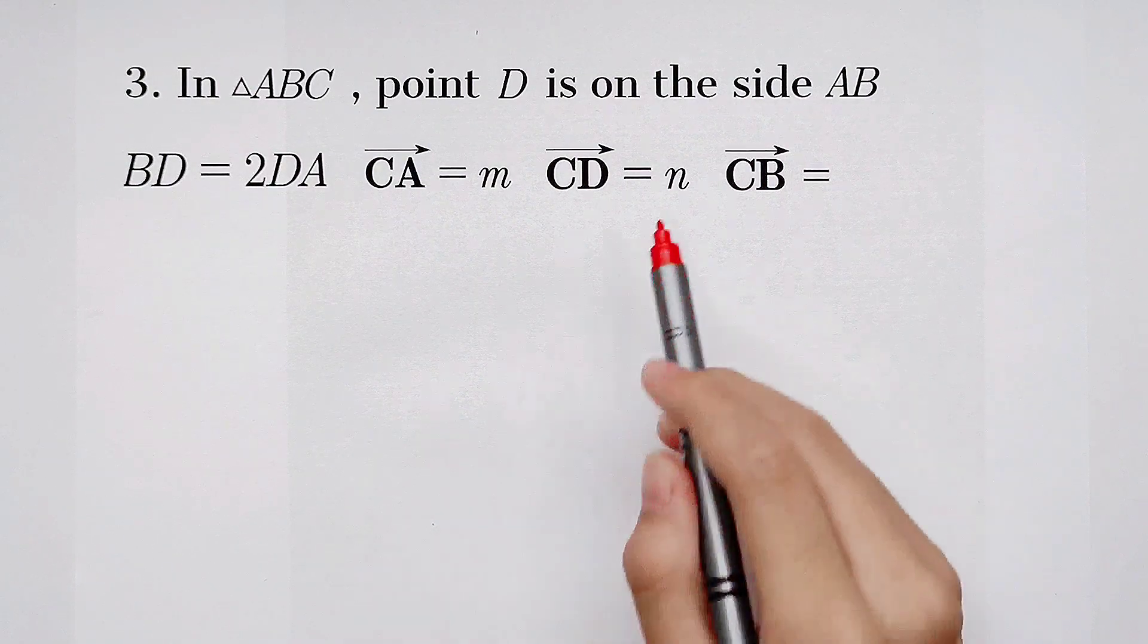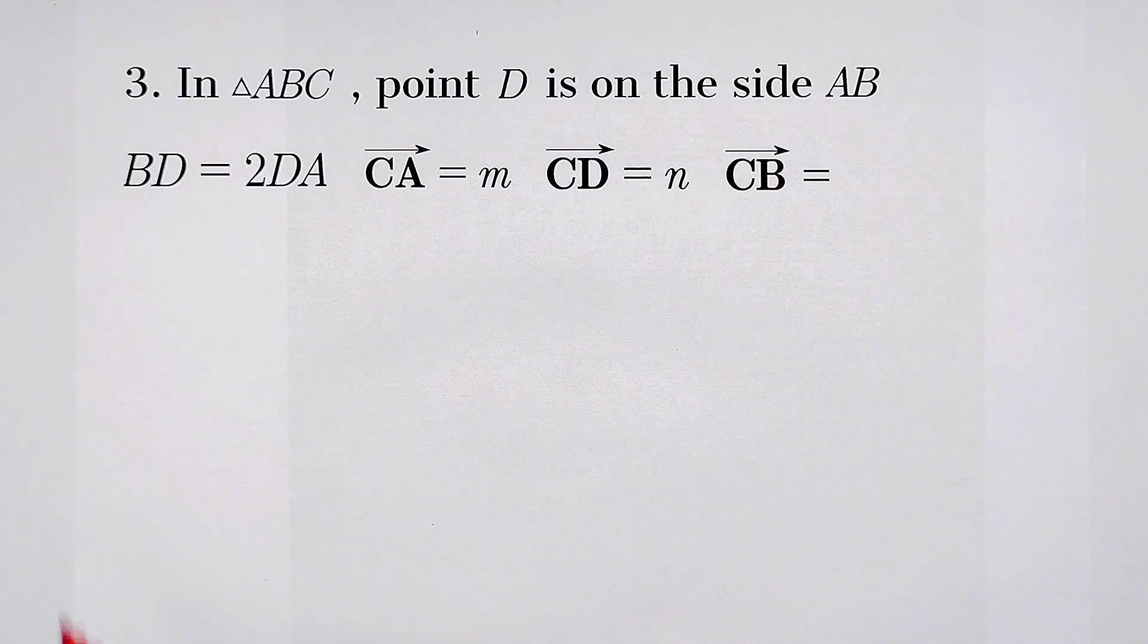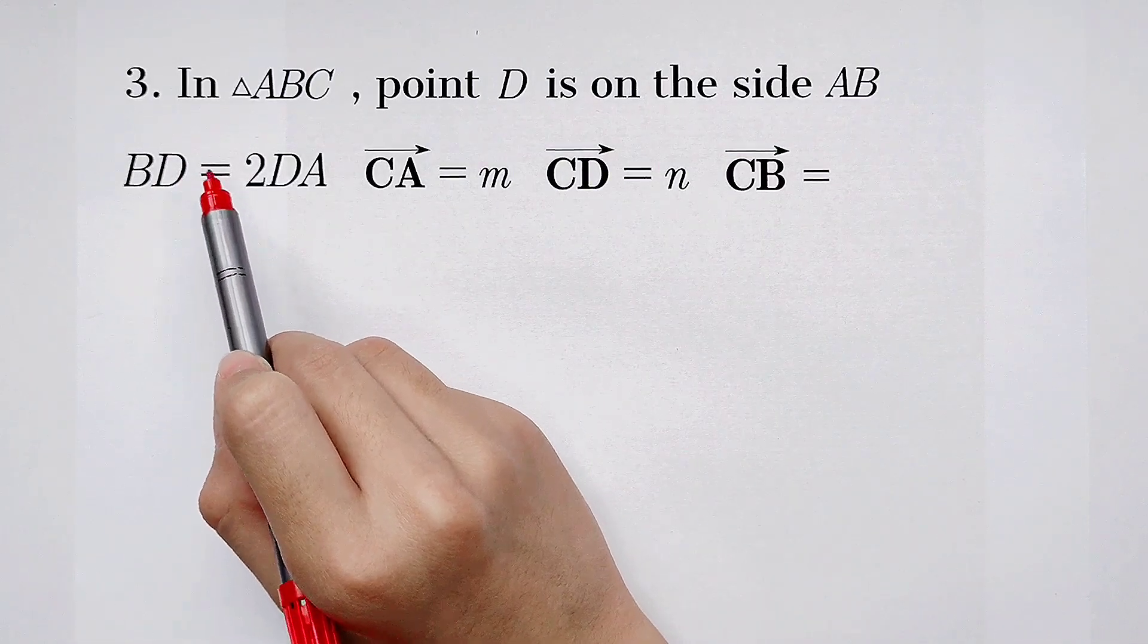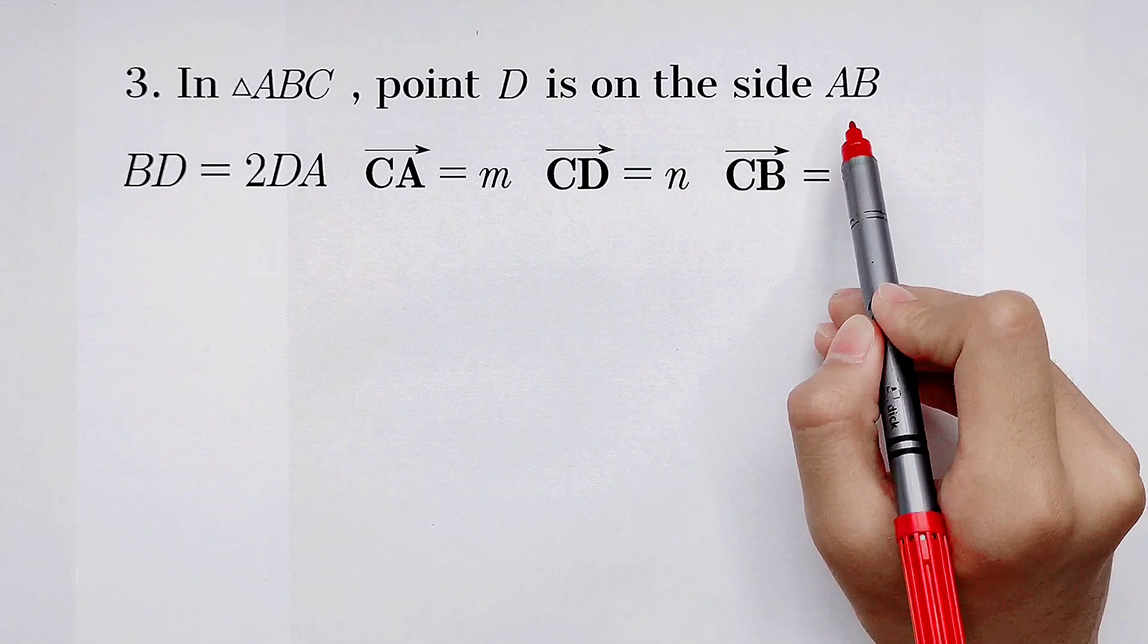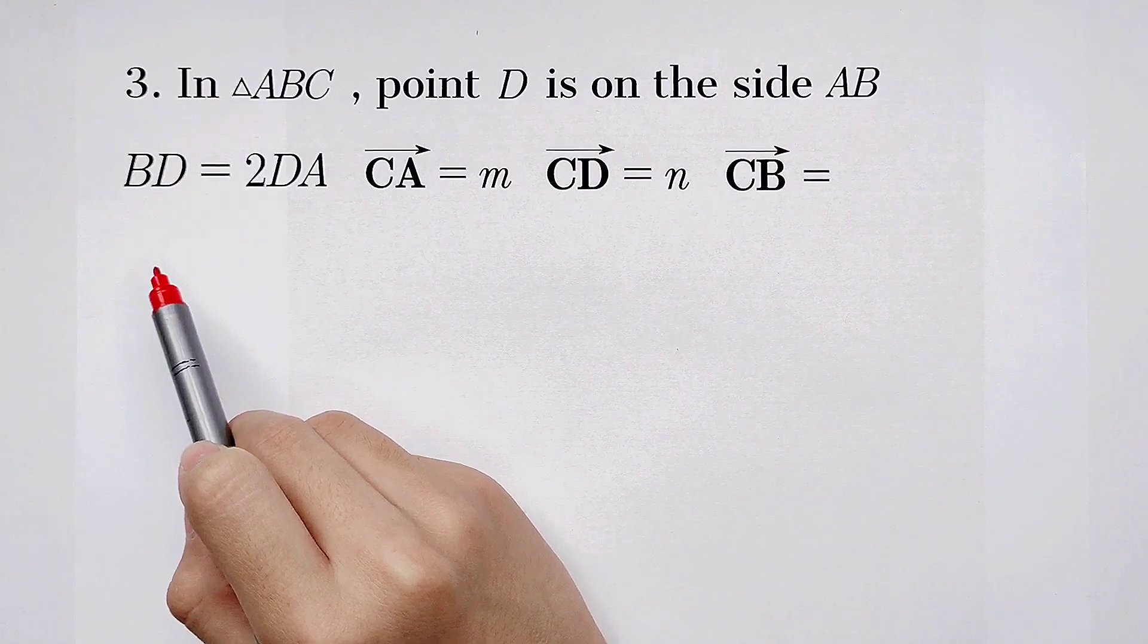Welcome back to Mathwino. This is the third question from this year's Chinese Gaokao. In triangle ABC, point D is on the side AB, and the length of BD is two times the length DA.